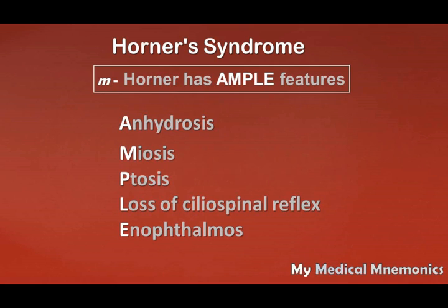A is for anhydrosis, meaning decreased sweating. M is for miosis, that is constriction of the pupil. P is for ptosis, that is drooping of the eyelid. L is for loss of ciliospinal reflex — a skin and eye reflex where pinching the skin causes dilation of the pupil on the ipsilateral side. E is for enophthalmos, meaning posterior displacement of the eyeball.